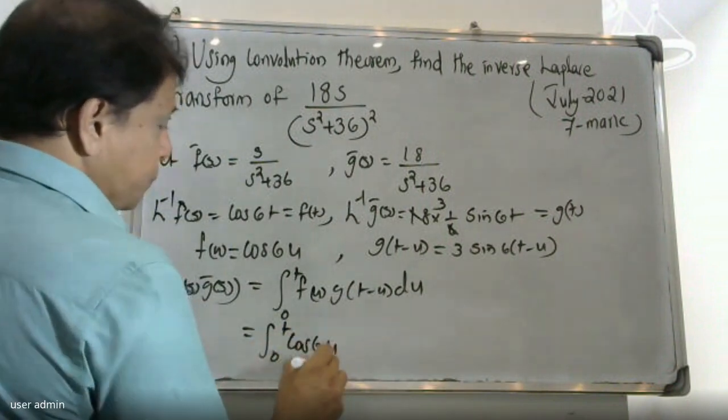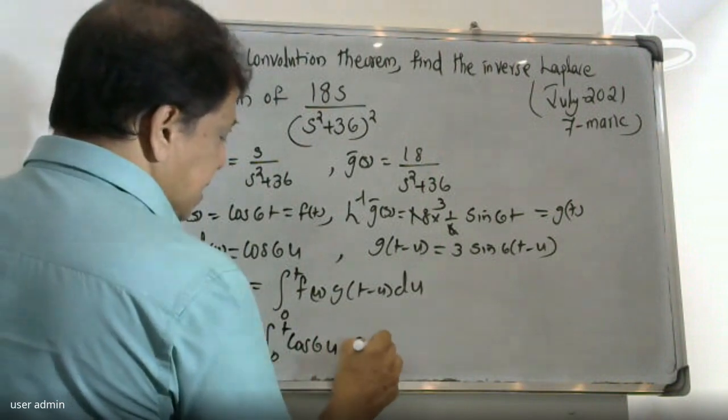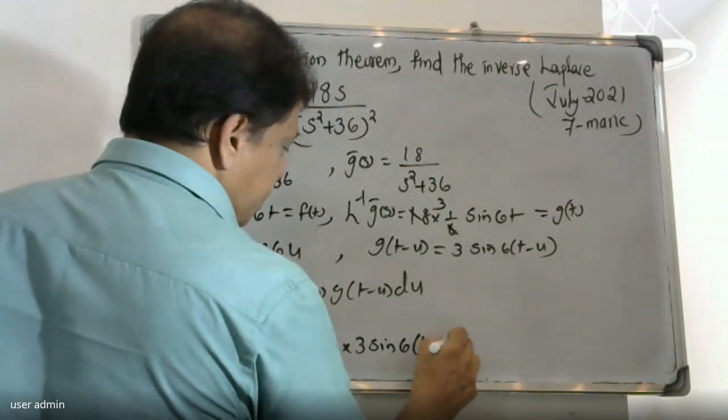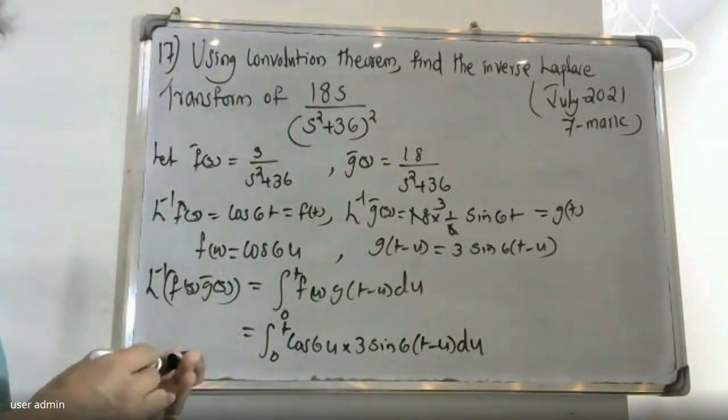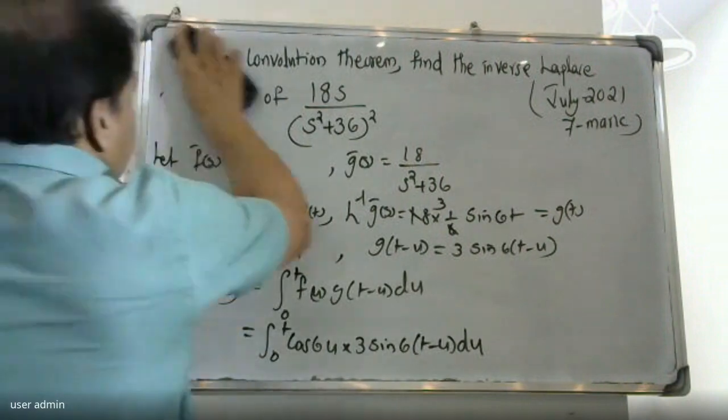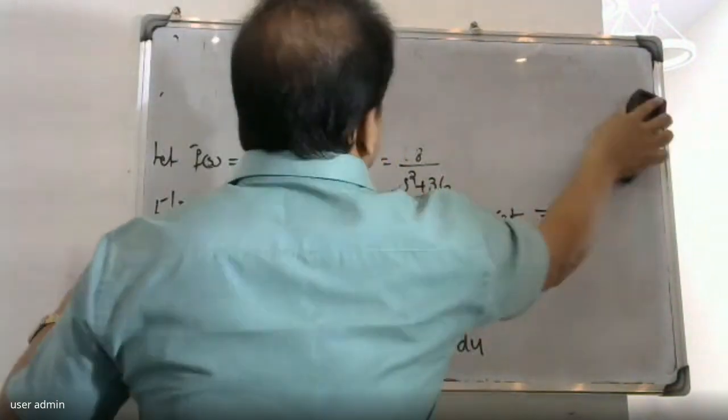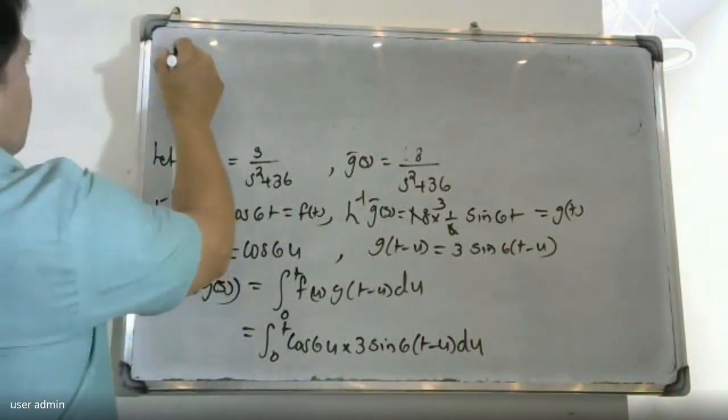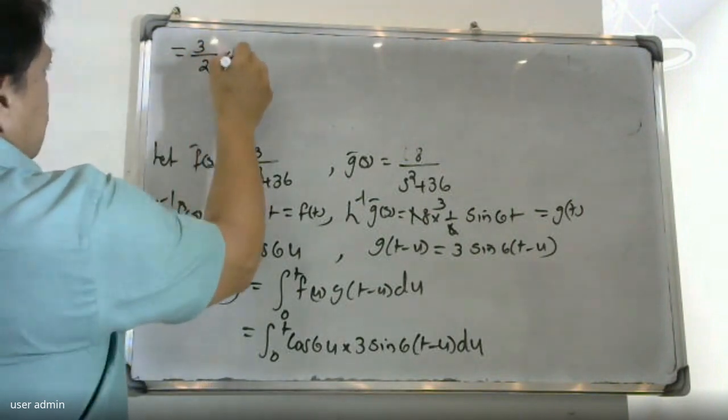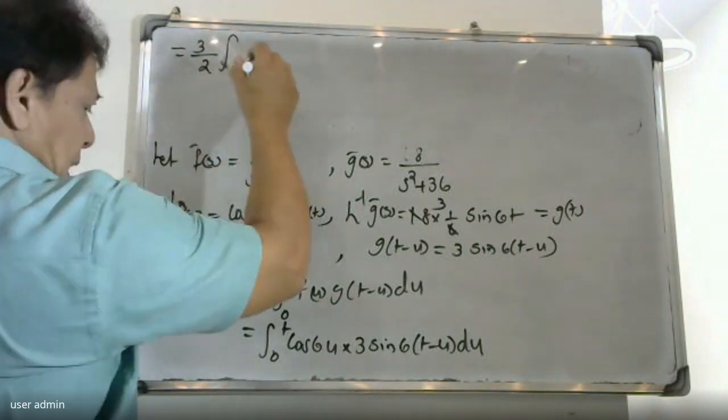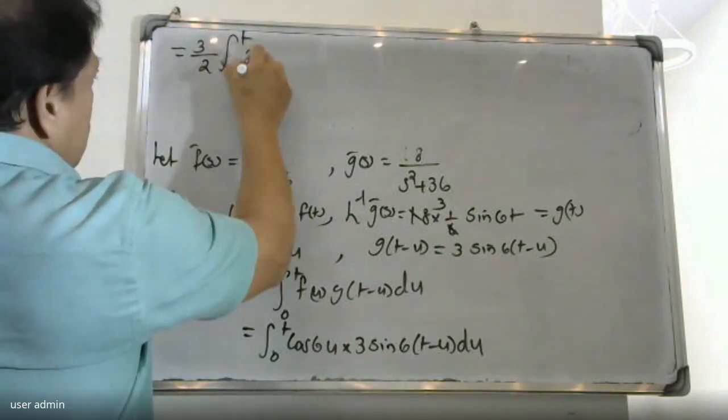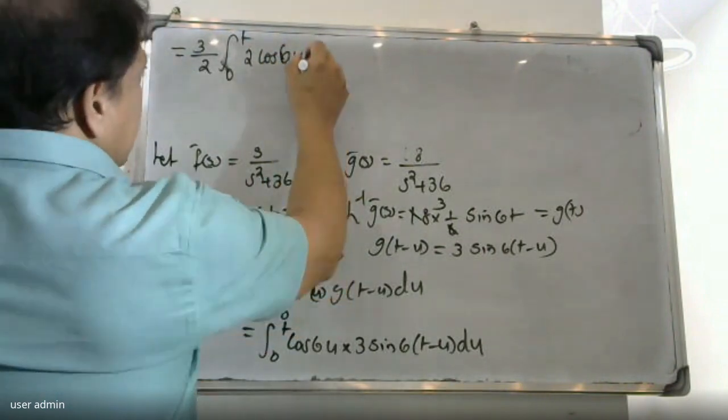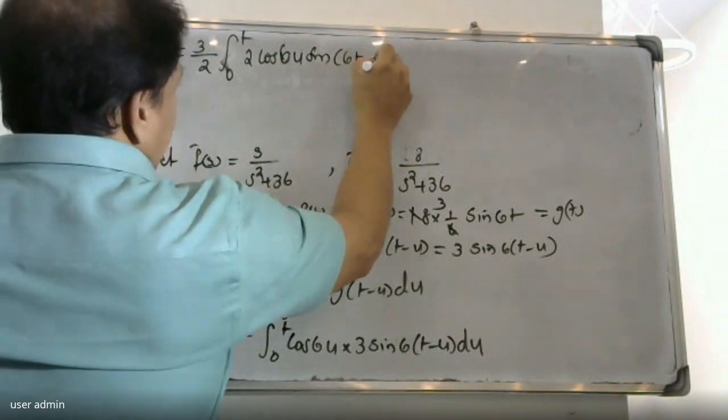Substituting, this becomes integral 0 to t of cos 6u times 3 sin 6(t minus u)du, which equals integral 0 to t of 3 cos 6u sin(6t minus 6u)du.